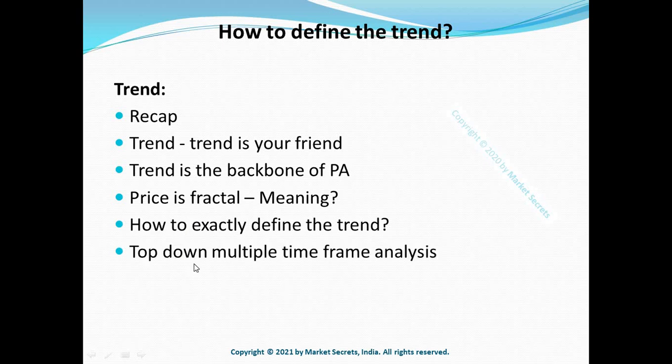You might ask: how can I make trading decisions if each time frame has a different trend? Isn't that a mess? It may look like a mess, but that is why we need to make a top-down multiple time frame analysis so that we can align as many time frames as possible in the direction of the bigger picture trend. This concept will be taught in the next few lessons. In simple terms, to define a trend or a consolidation in a mechanical and methodological way, we use supply and demand imbalances as well as trend lines.